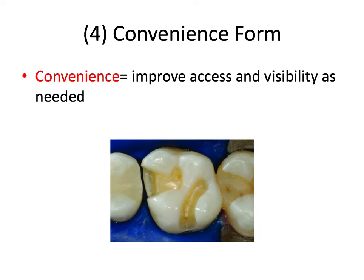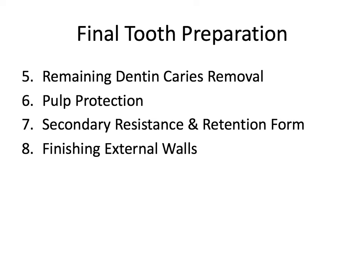Next is convenience form. Convenience is about improved access and visibility as needed — this is extension of the preparation to provide adequate visibility, accessibility, and overall ease of operation in preparing and restoring the tooth, so you can see what you're doing. That covers the four steps of the initial tooth preparation.